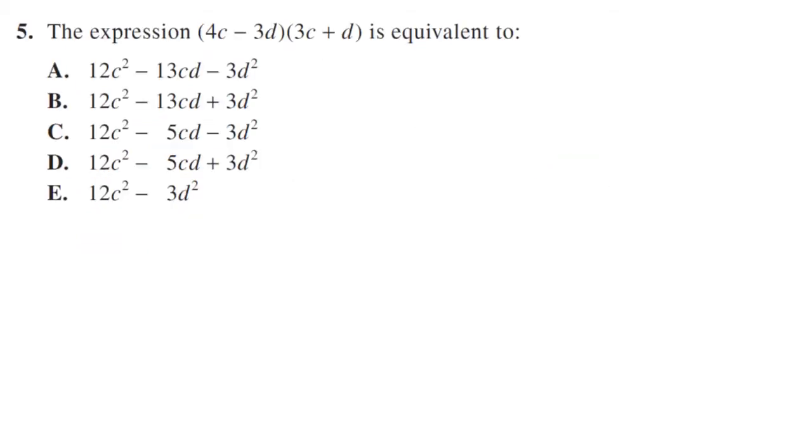The expression is equivalent to, so we're just going to FOIL this. First outer inner last. So we have 4C times 3C, 12C squared. Outer and inner, so we have plus 4Cd minus 9Cd. And then last, minus 3D squared.